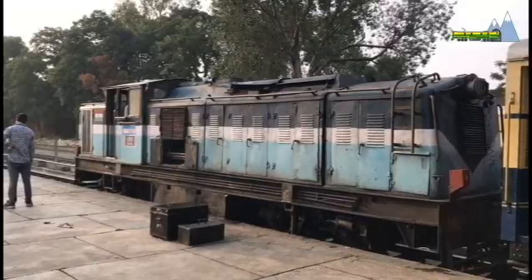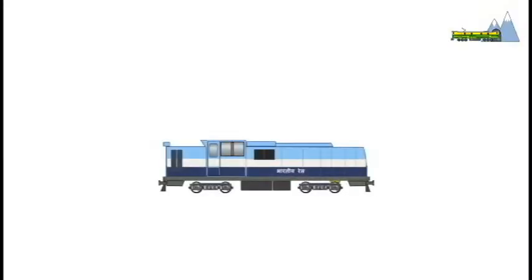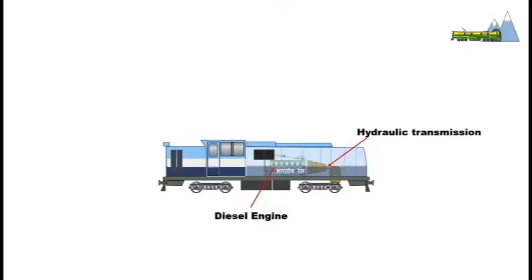A diesel hydraulic locomotive is a locomotive in which the power from a diesel engine is transmitted to the wheels through a hydraulic transmission system.